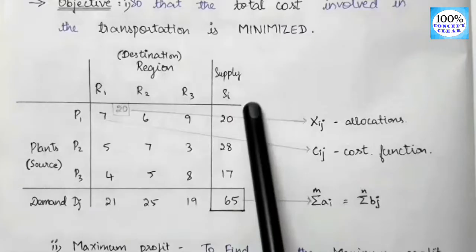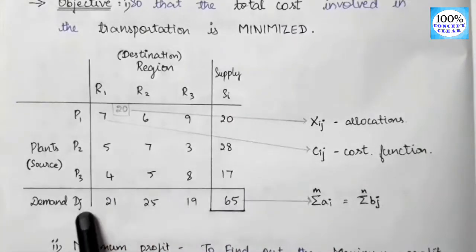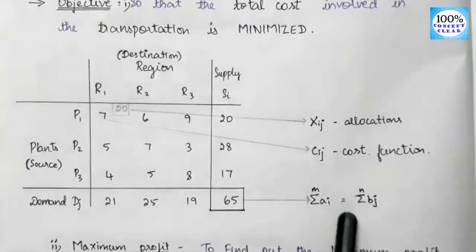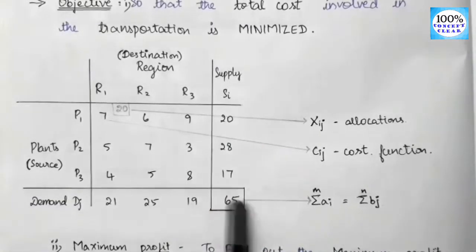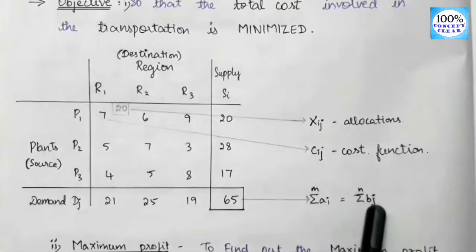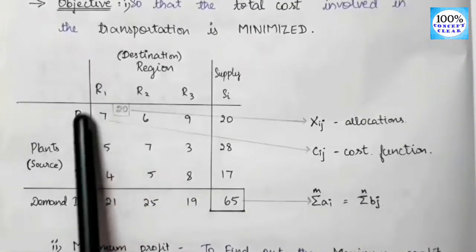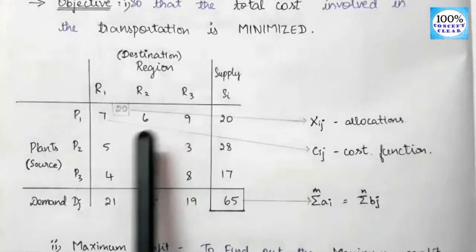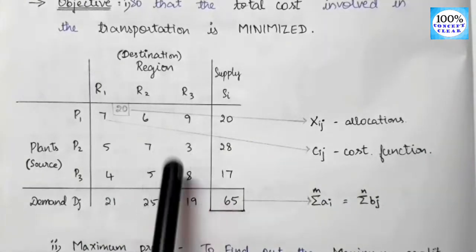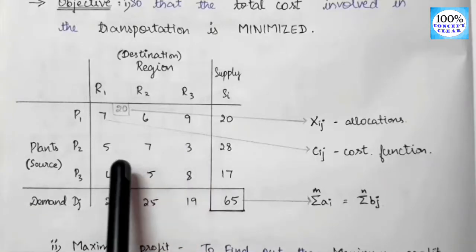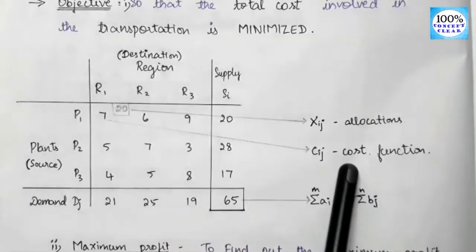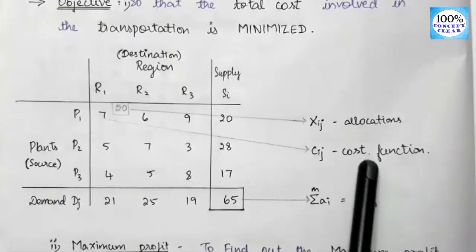That means demand and supply are equal — the summation of Ai equals the summation of Bj. This is the balanced transportation problem. If there is minimum cost, the cost function is denoted as Cij. If there is maximum profit, the profit is denoted similarly.